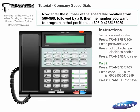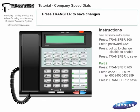Remember to enter a 9 in front of the number. For example, position 605: 9, 403, 543, 6959. Press Transfer to save your changes.